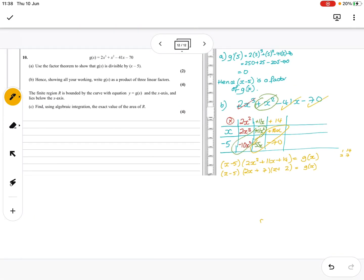Now, next part of the question. Find the finite region bounded between g(x) and the x-axis that lies below. So let's think what curve we have. So we've got a solution at 5, x equals 5, x equals -7/2, and x equals -2.